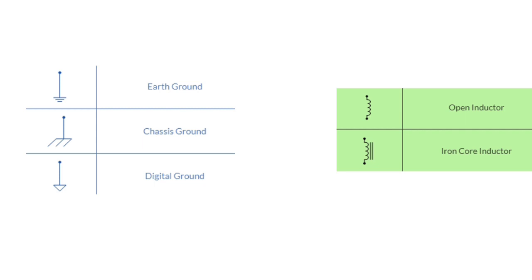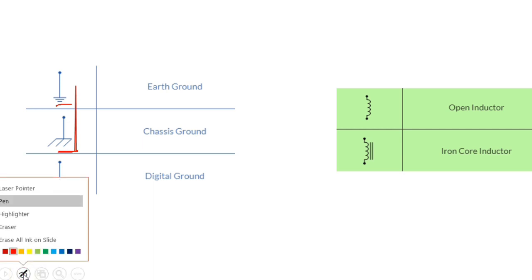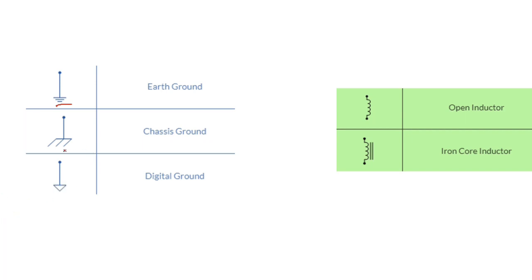Here we're going to see some ground symbols and inductor symbols. For these three, these are the ground symbols. We have three types: this is the earth ground, this is the chassis ground, and this is the digital ground.